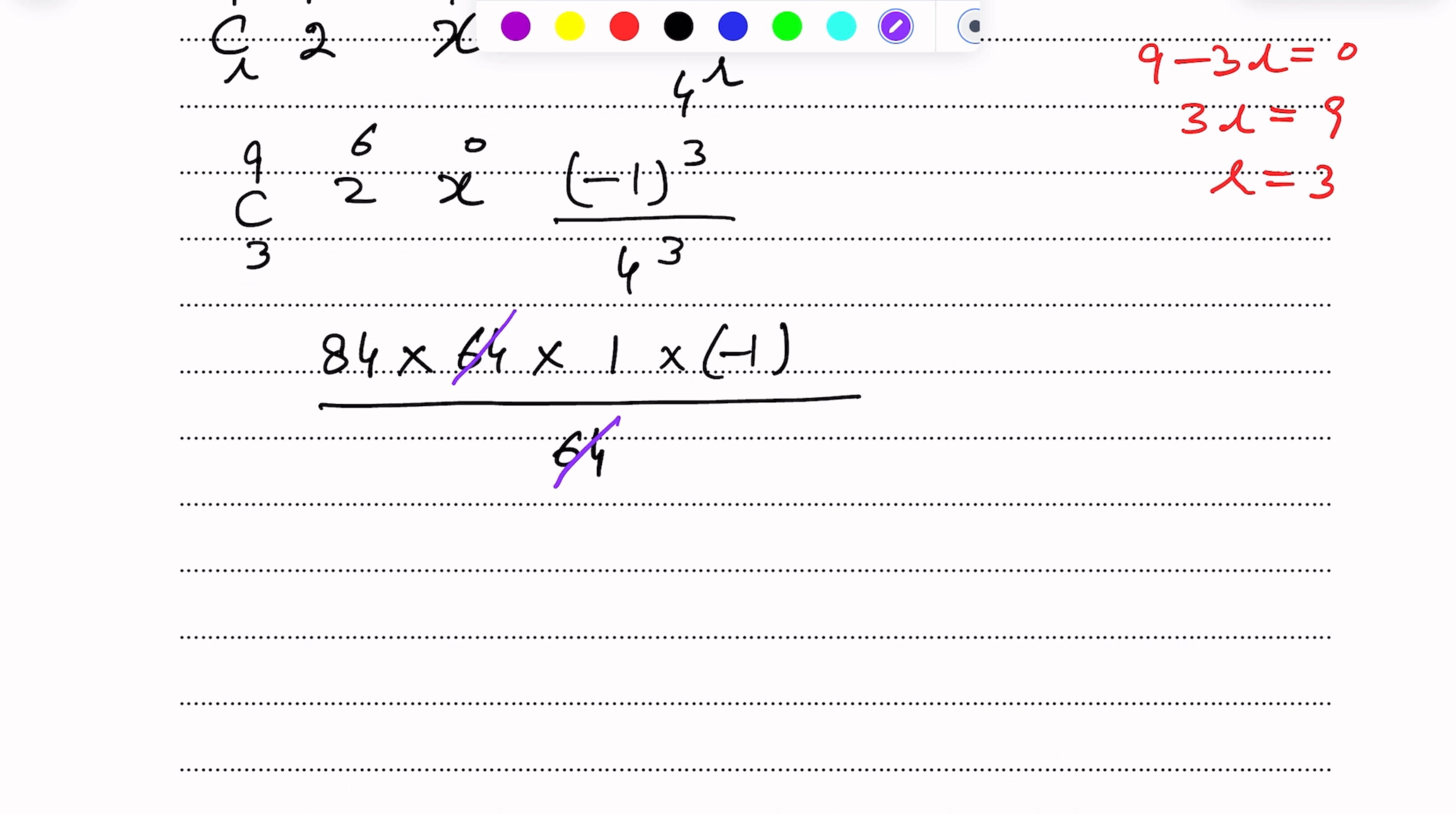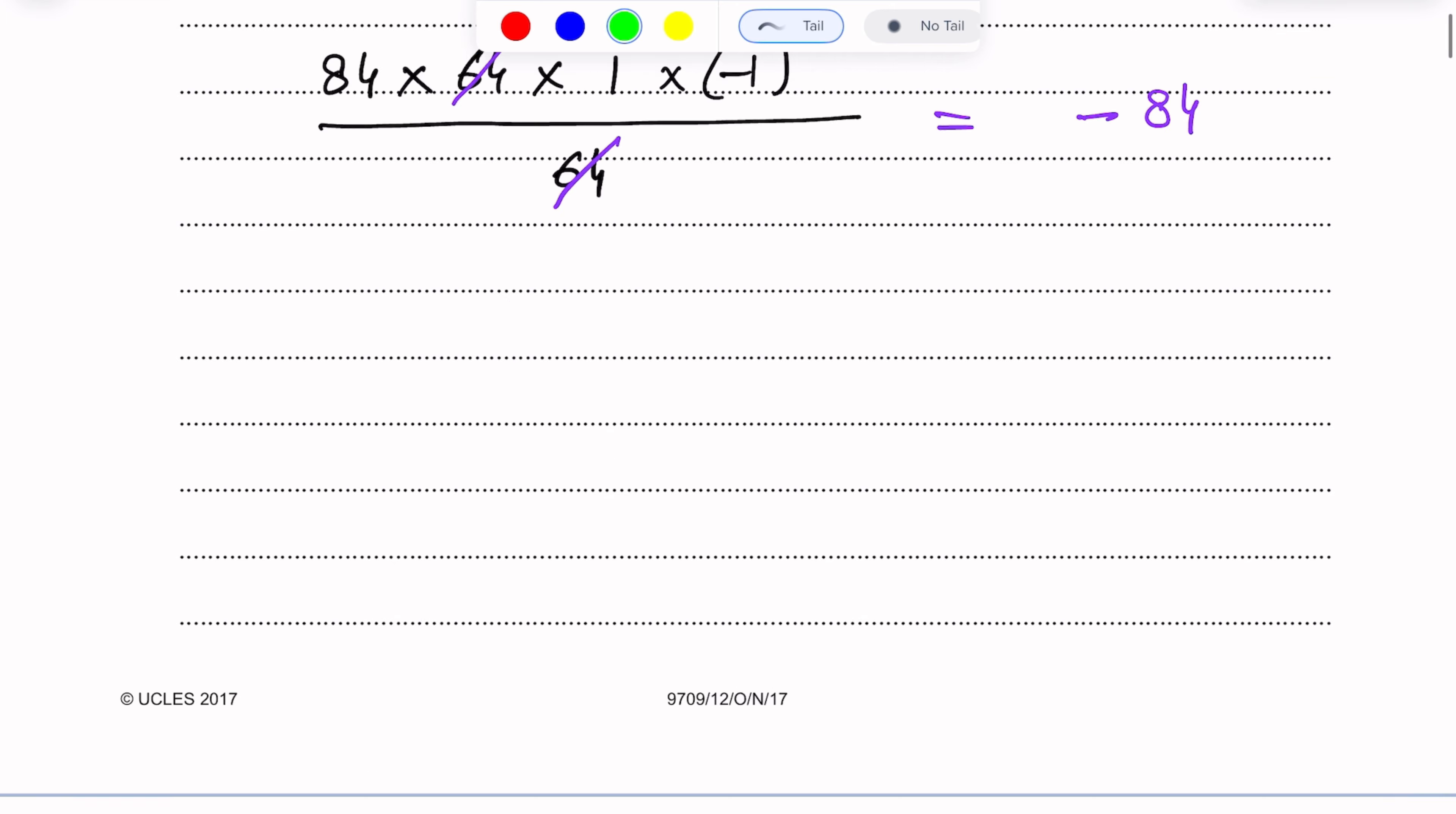So this gives us 84 × 64 × 1 × (-1/64) = 84 × (-1) = -84. So -84 is the term, very clearly, that is independent of x. Therefore, -84 is the required answer.